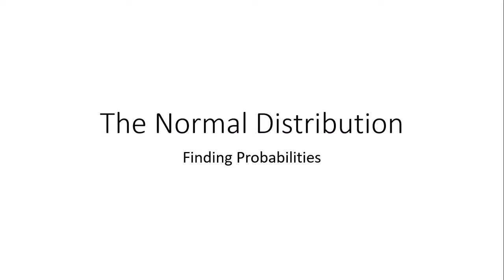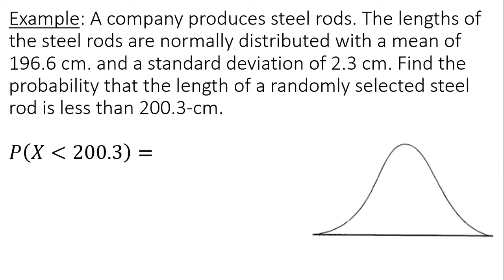This is a video on using the normal distribution to find probabilities. A company produces steel rods. The lengths of the steel rods are normally distributed with a mean of 196.6 centimeters and a standard deviation of 2.3 centimeters.